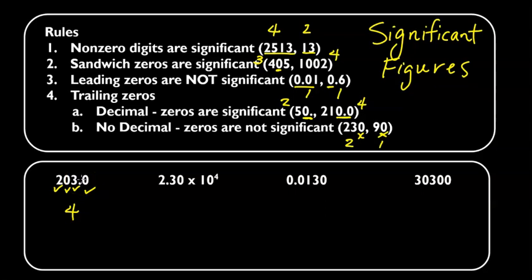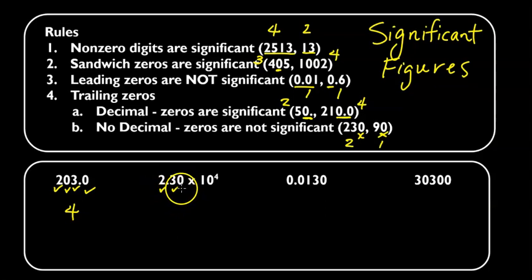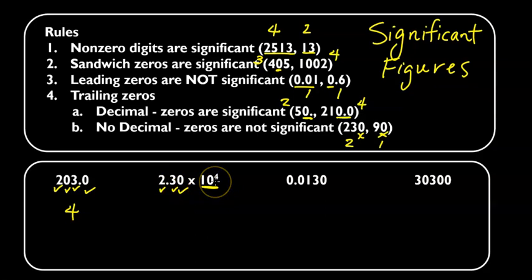Let's take a look at the next number. The 2 and the 3 are non-zero, so they are significant. The trailing zero here also has a decimal, so that's also significant. We're not going to worry about the scientific notation part because that just tells us where the decimal goes. So this will have three significant digits.